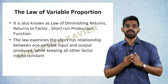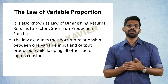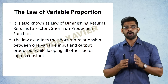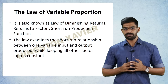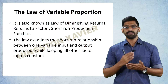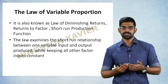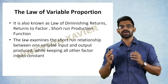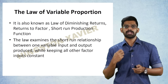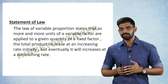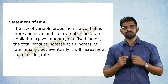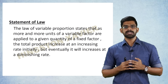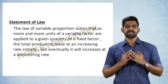With those basic terms established, we now study the Law of Variable Proportion, also called the Law of Diminishing Returns or Returns to Factor — this is the short-run production function. The law of variable proportion states that as more and more units of a variable factor are applied to a given quantity of a fixed factor, the total product increases at an increasing rate initially but eventually it will increase at a diminishing rate.